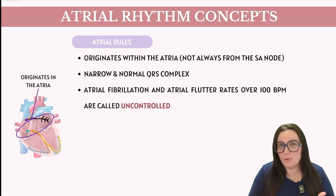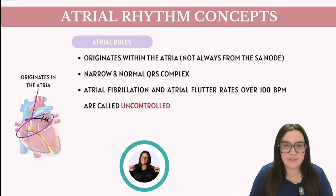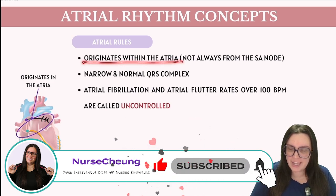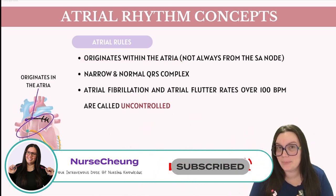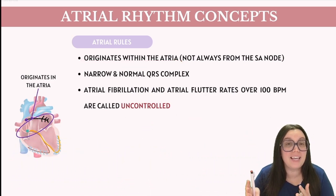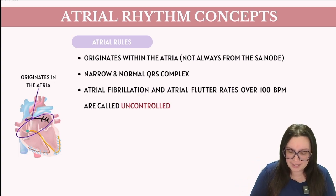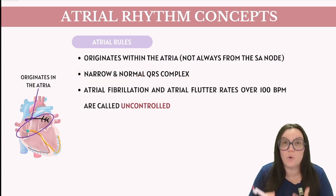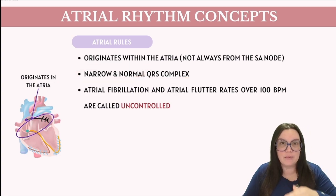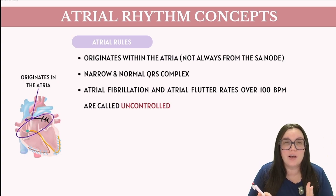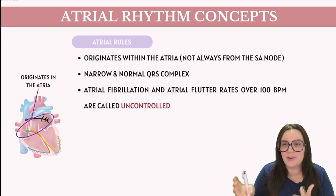To begin, there are common rules that we see whenever we're identifying atrial rhythms. Number one, it's going to originate within the atria — it doesn't necessarily mean that it's originating from the SA node, so that's very important to know. What's also key is that our QRS complex is going to be narrow and normal. Anytime we have a rhythm coming at the junction or above the junction, the QRS complex should be narrow and normal.